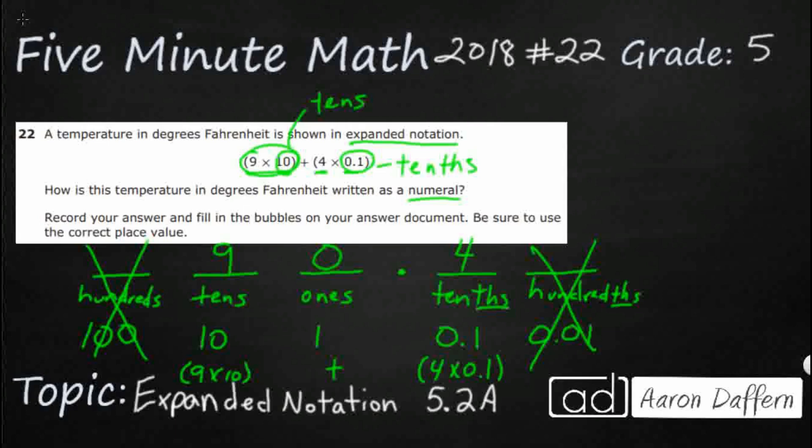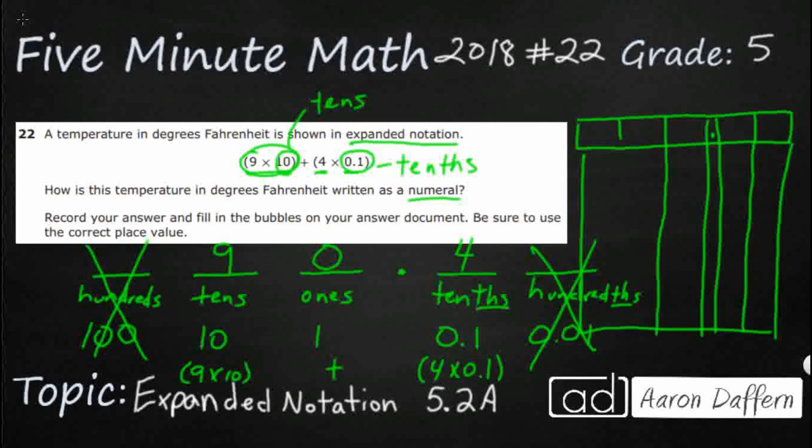Now we've done all that work, and now we need to figure out how we're going to bubble in our answers. So this is what the answer document looks like. You're going to get this little grid right here, and you're going to get this griddable response. You're going to get a decimal right there, two columns to the right of the decimal, and three columns to the left of the decimal. So we need to make sure we hit our decimal right there. We're going to put it in like this, 90.4.